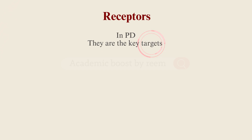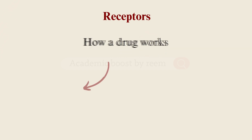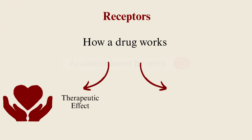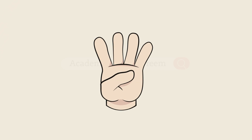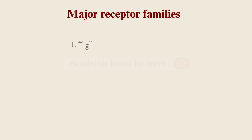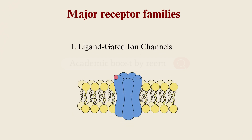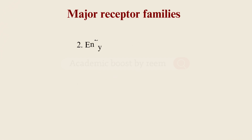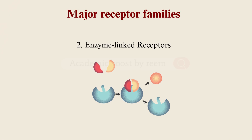In pharmacodynamics, receptors are the key targets, showing us how a drug works in both producing its therapeutic effect or its side effects. There are four major receptor families. First, the ligand-gated ion channels — we need a ligand binding to the channel in order to open it. Second, enzyme-linked receptors — when a ligand binds to them, they activate an enzyme system inside the cell.